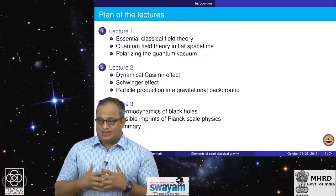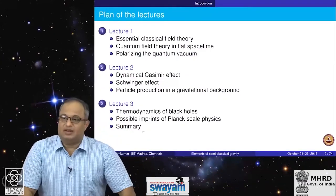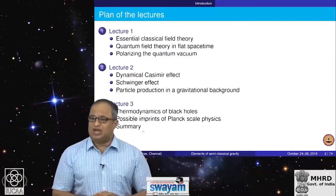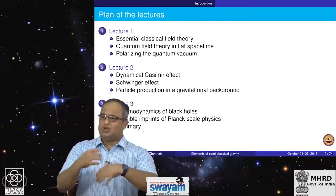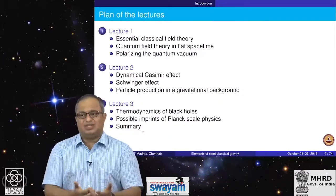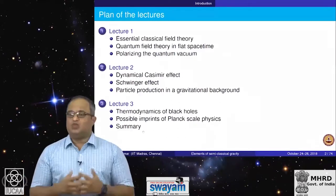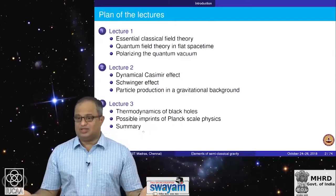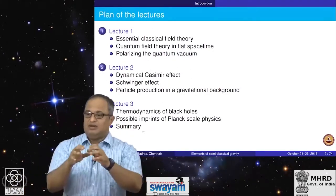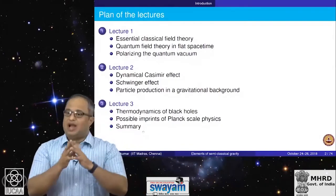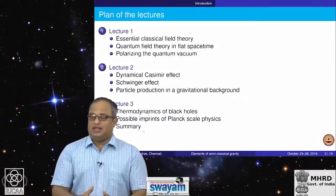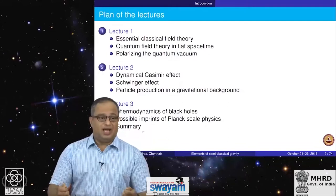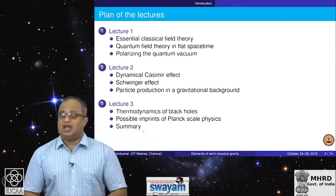I will talk about particle production in a gravitational background. When there is a time-dependent gravitational field such as a collapsing black hole, the modes are more complex. A much simpler system to illustrate this phenomenon of particle production is when you have a time-dependent gravitational field as in an expanding universe. If you have a time-dependent background and study quantum fields in it, what you will find is the generation of particle-antiparticle pairs, very much like what happens in the case of the electric field.